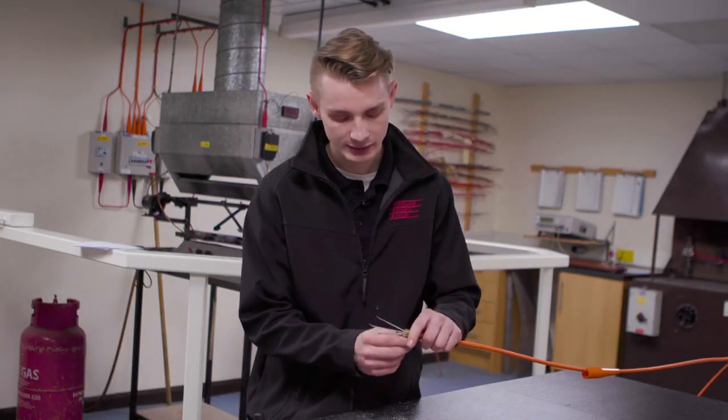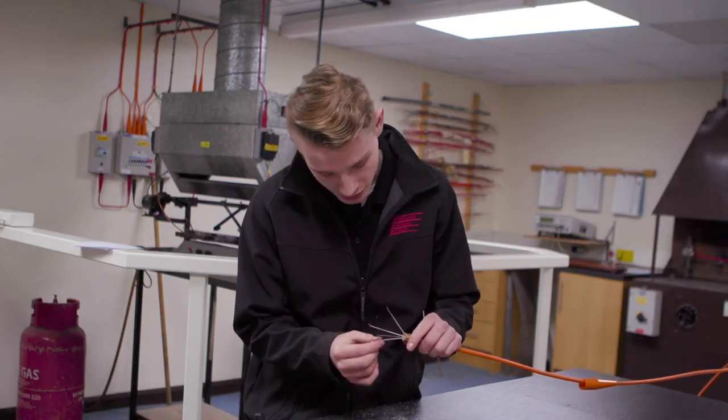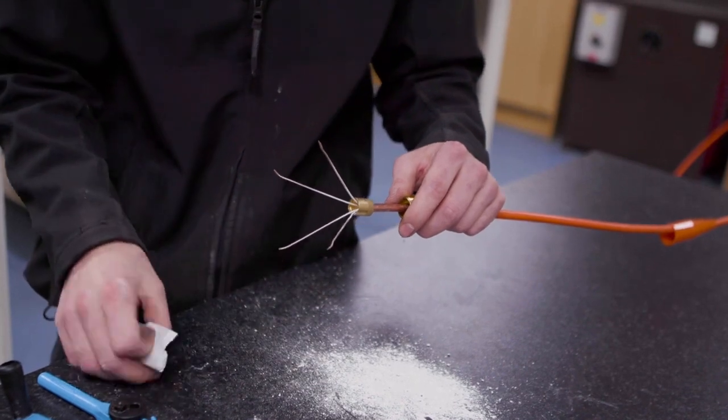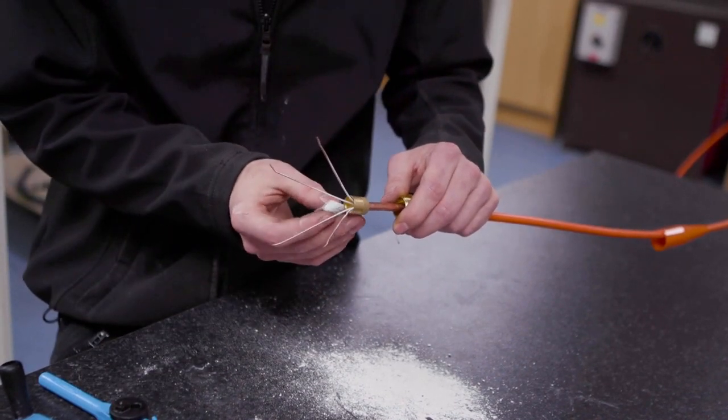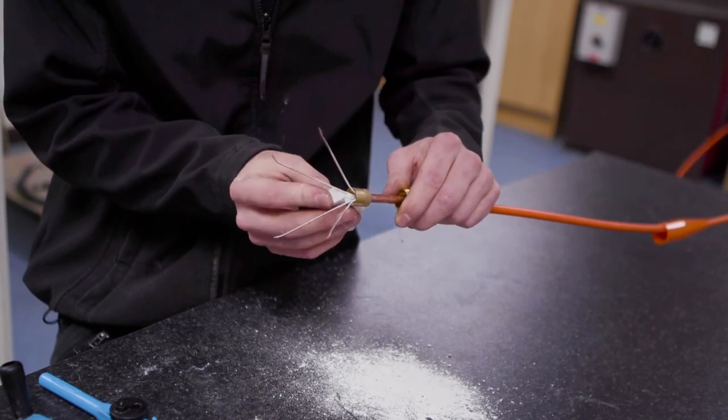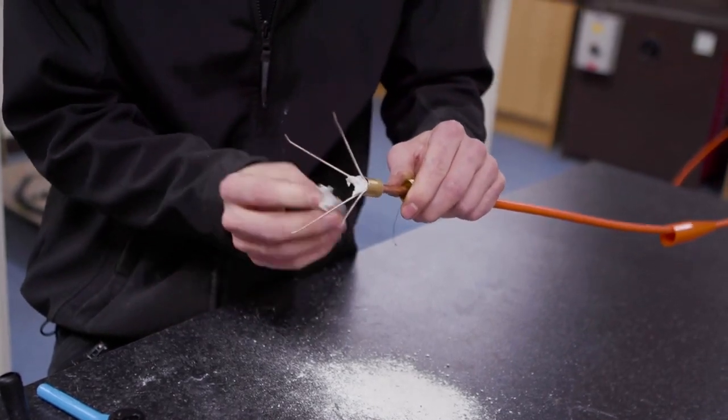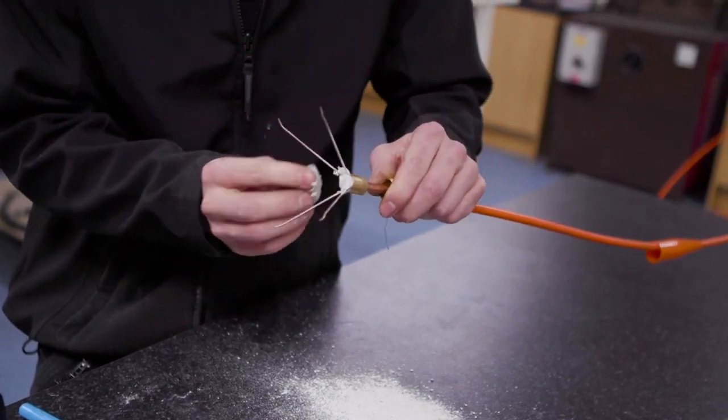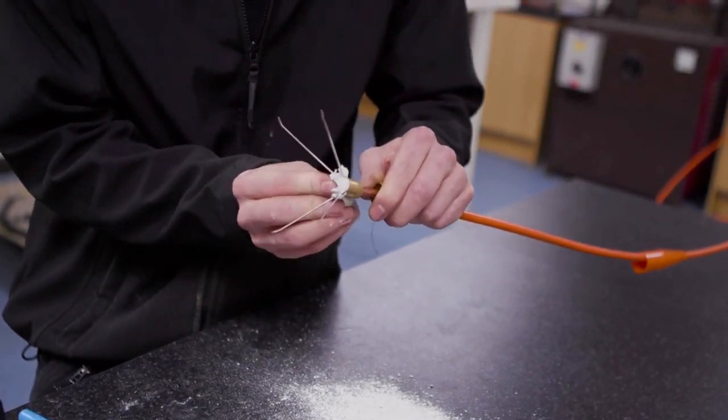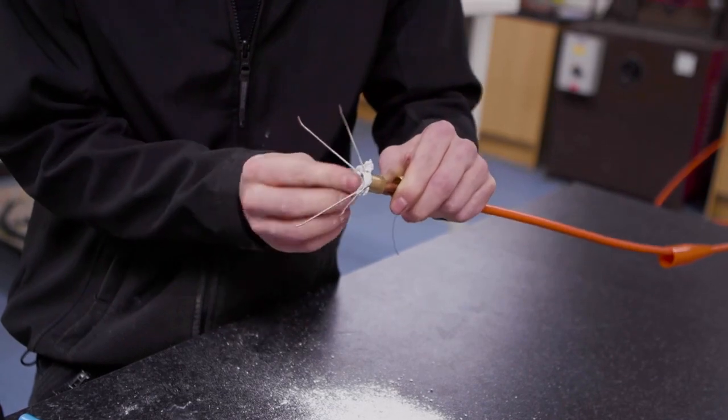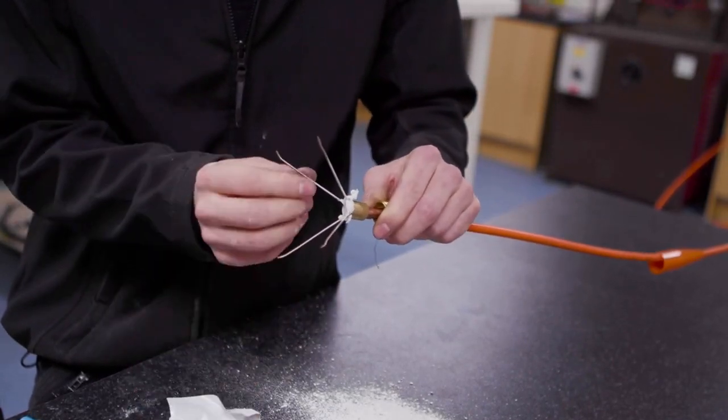So our next step now is to spread the conductors out, making sure that none of them are touching. Then we'll apply the compound from one side only, making sure we push it all the way down into the base of the pot until it starts coming out of the other side so we know that there's no air locked inside of the pot.